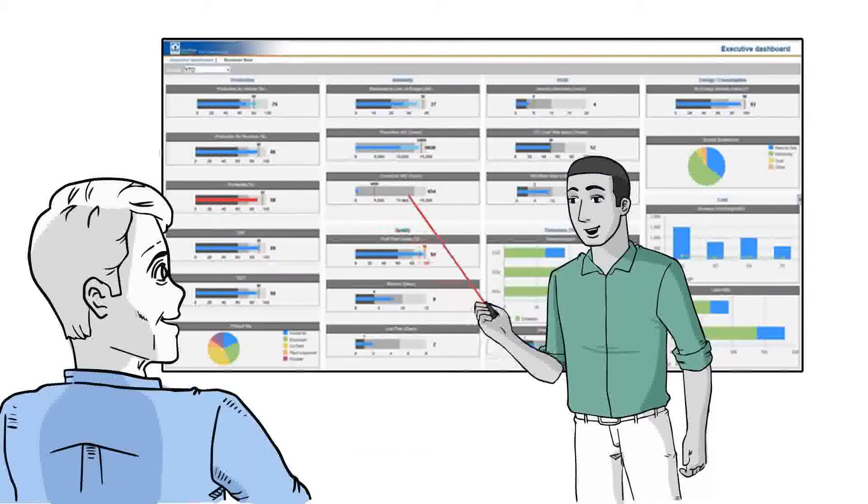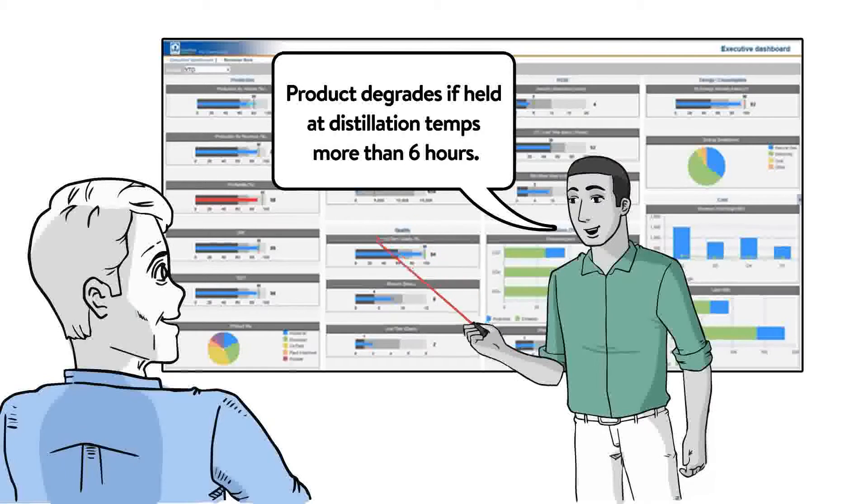Thanks to Rolta OneView, Garth, Jim, and Jenny were able to quickly pinpoint the cause of the quality problem and can now execute a management of change project to modify the master recipe.